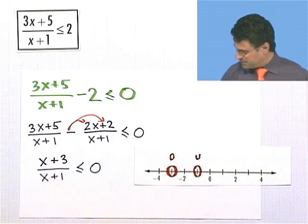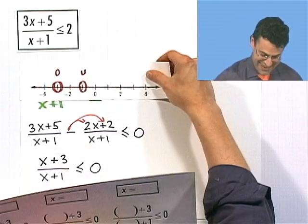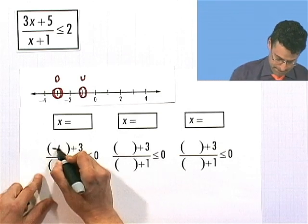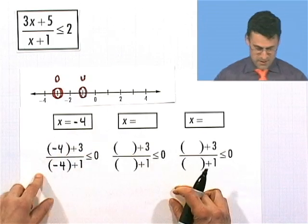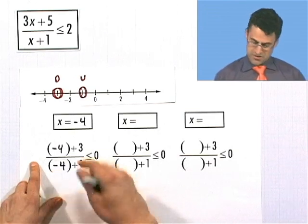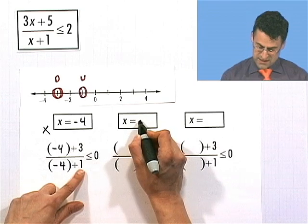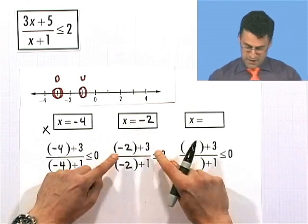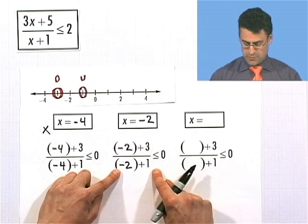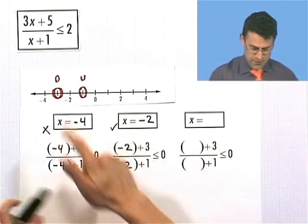Now I've got three regions to consider. Let's pick some points. Let's plug in negative 4: the numerator is negative, the denominator is negative, negative over negative is positive, which is not less than or equal to 0 — so we don't include that. Next, between negative 3 and negative 1, the easy point is negative 2: negative 2 plus 3 is positive, and negative 2 plus 1 is negative, so positive divided by negative is negative, which is less than or equal to 0. So this is a good region.